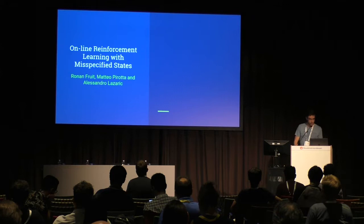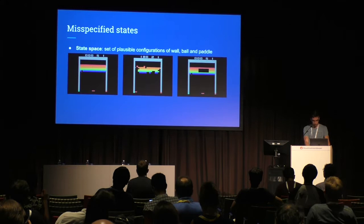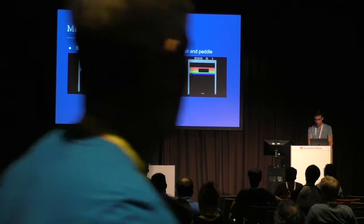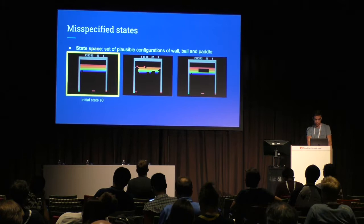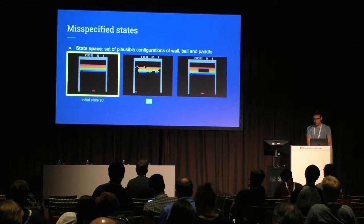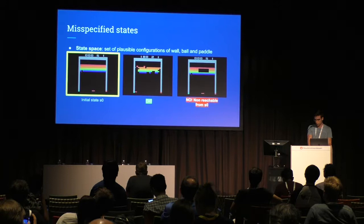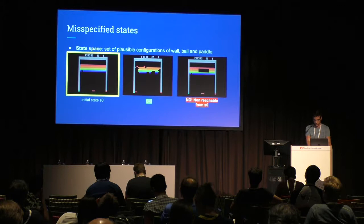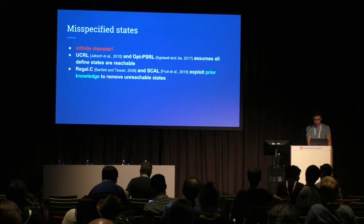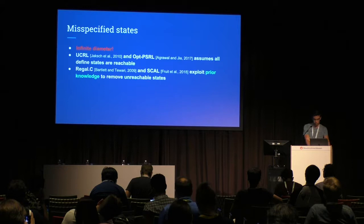Now we'll talk about online reinforcement learning with misspecified states. To illustrate the idea, take the game of Breakout. I've displayed three configurations: the initial state, a reachable state after playing for some time, and a third where there's a hole in the brick wall — which is not reachable from the initial state. This is what I call a misspecified state. The problem is these states induce an MDP with an infinite diameter.